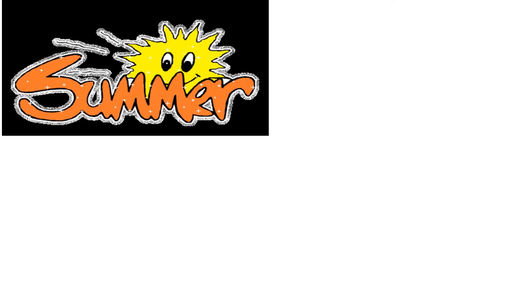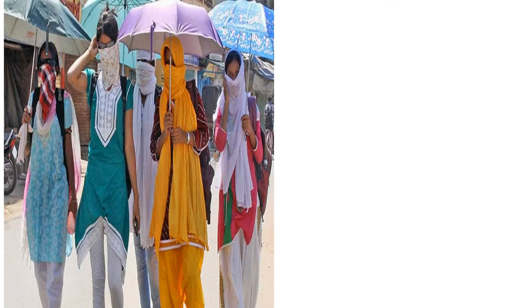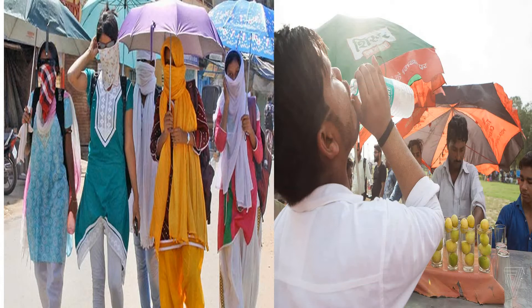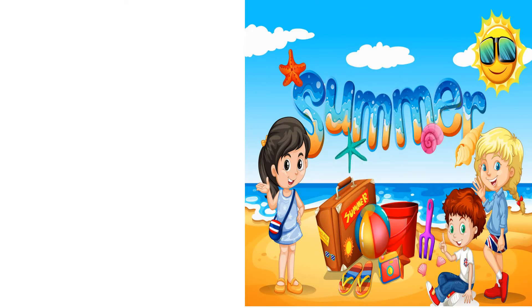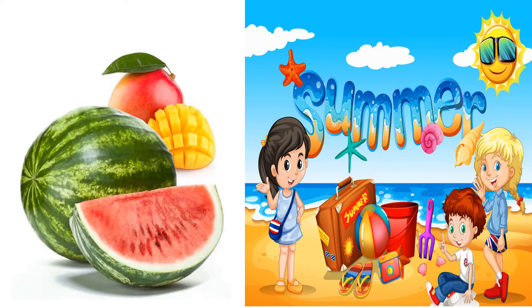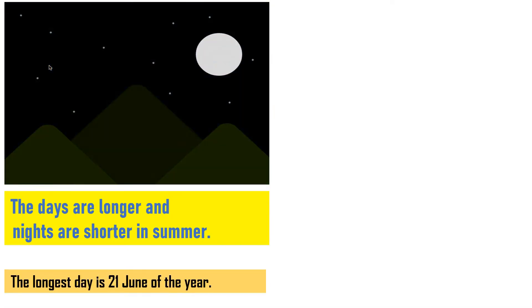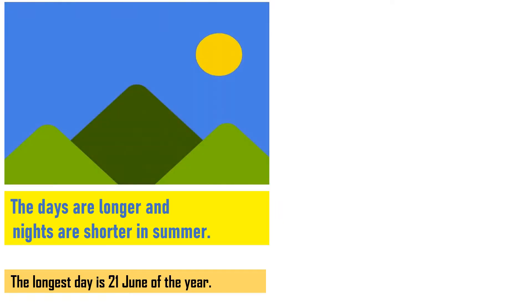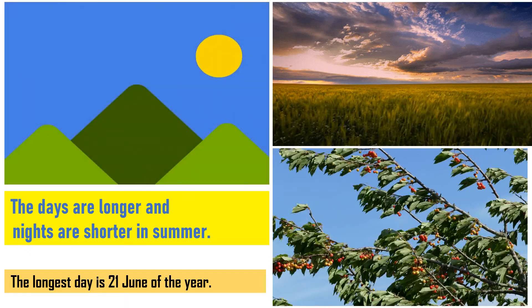We have also learned about summer season. This season comes after spring. We wear cotton clothes during summer, and we use umbrellas to protect ourselves from sun heat and light. We like to drink cold water during summer. Children enjoy this season by eating juicy fruits like watermelon and mango. The days are longer and nights are shorter in summer — the longest day of the year is 21st June. Hot winds blow during this season, and these hot winds are not good for our health.